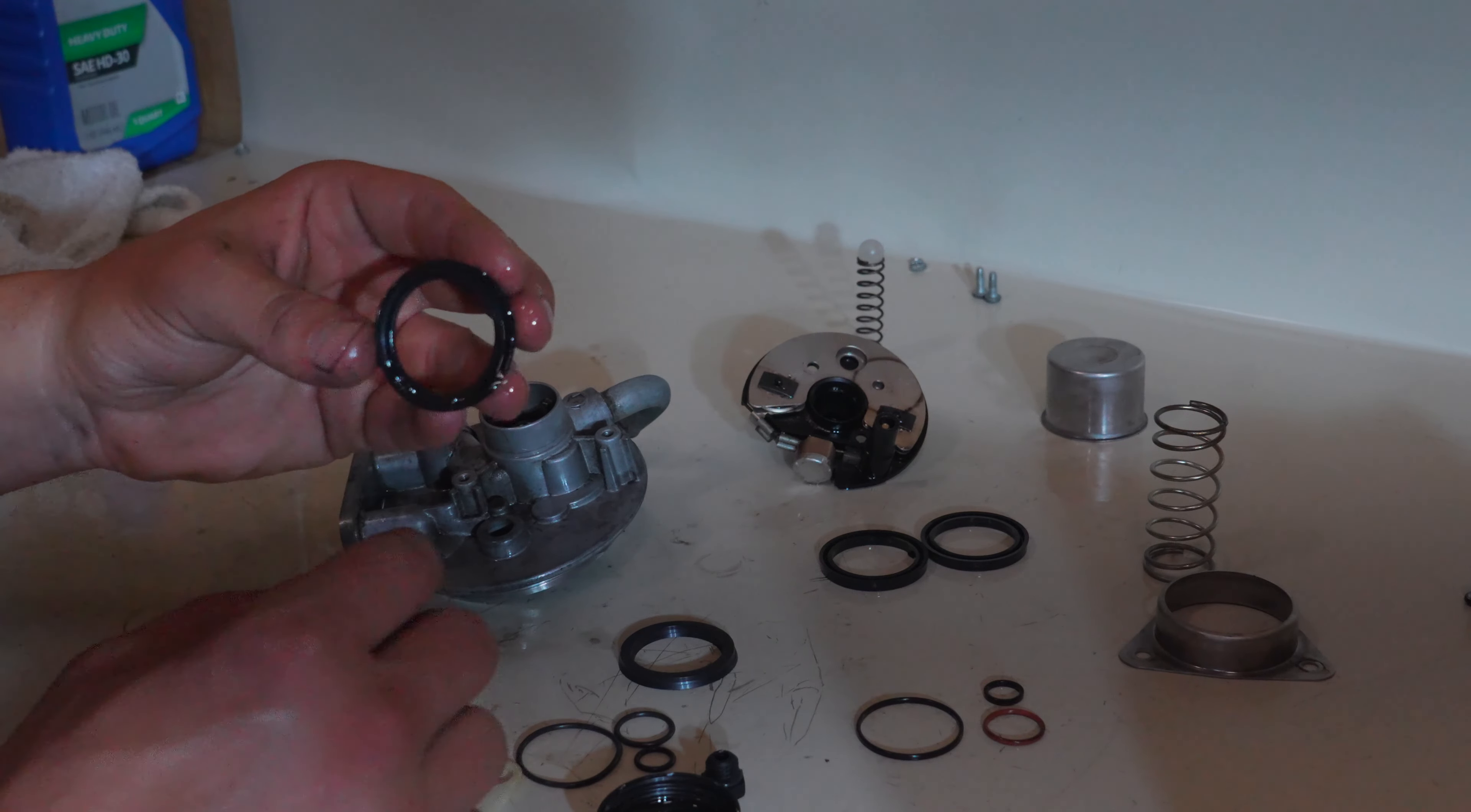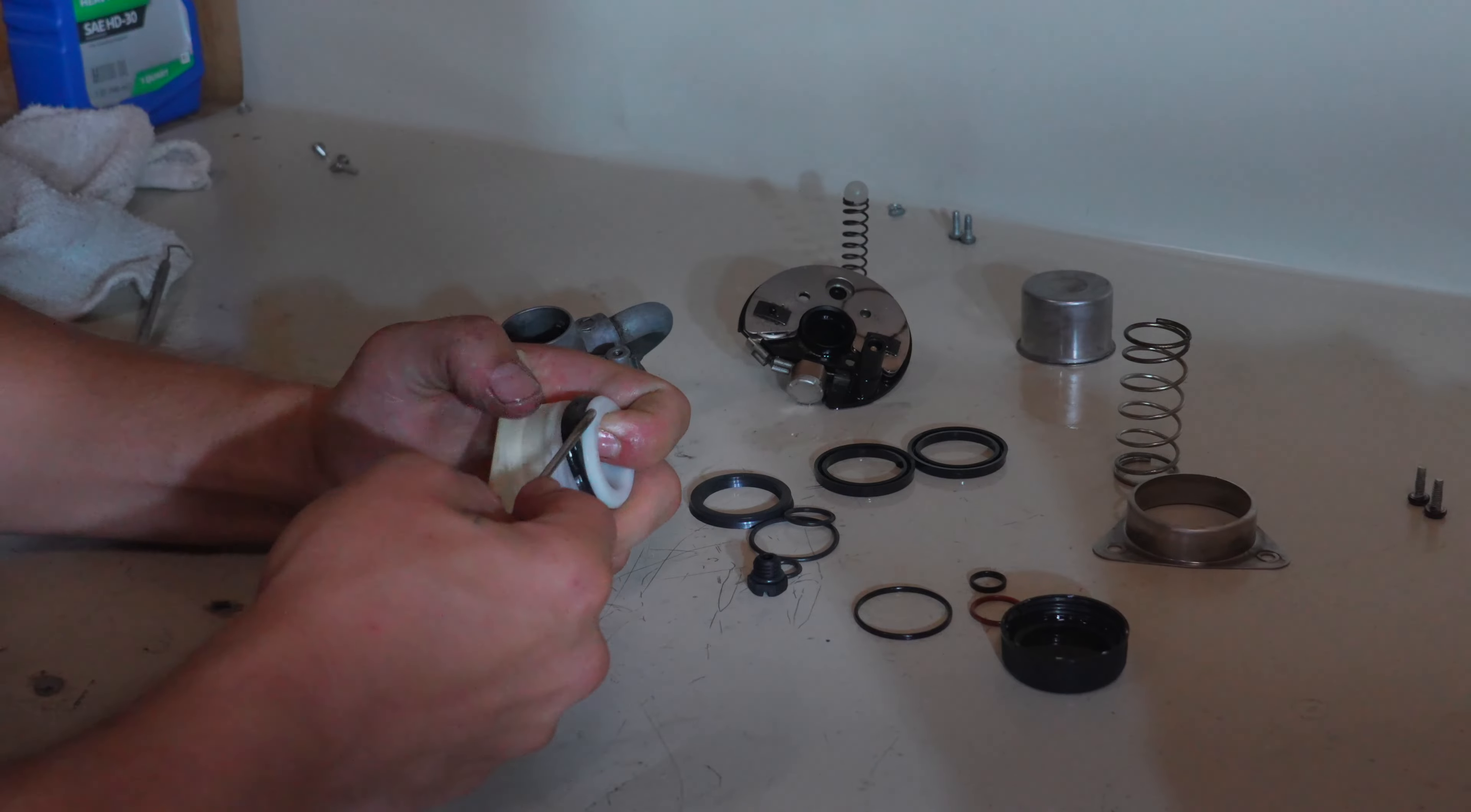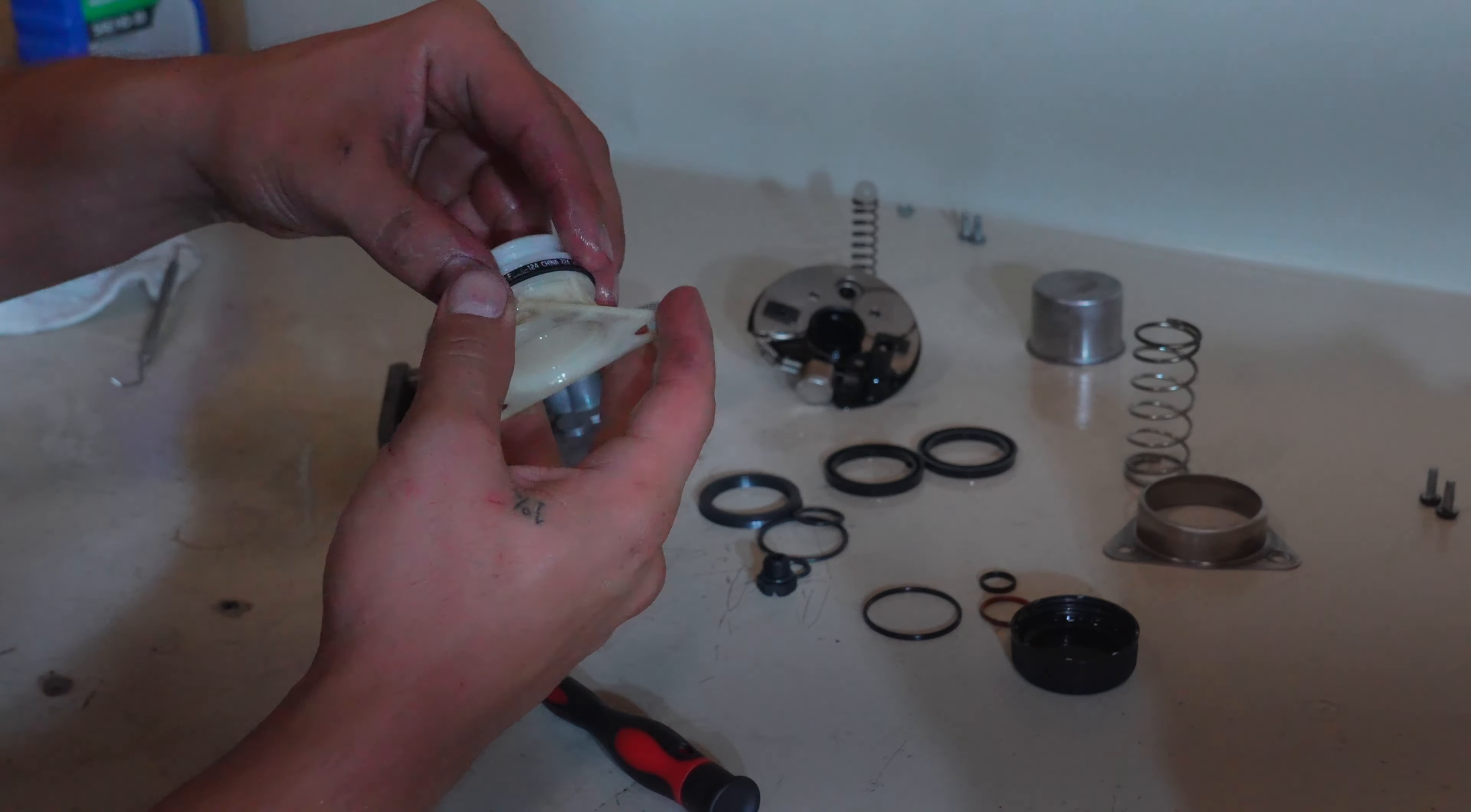Now I'm going to grab one of these large seals. I'm going to dip it in some oil, get it nice and lubricated. And then the bottom seal, this side with the flange on it, is going to be facing down. Let's go ahead and work that into place. There we go. We got the bottom seal in place.